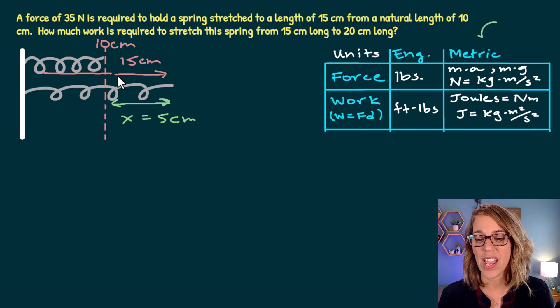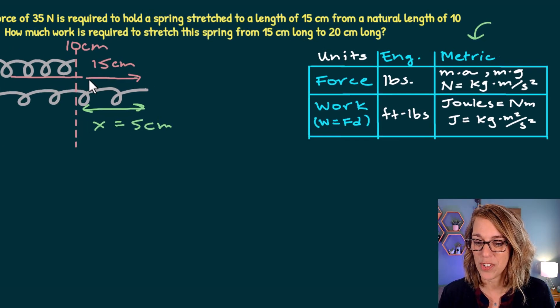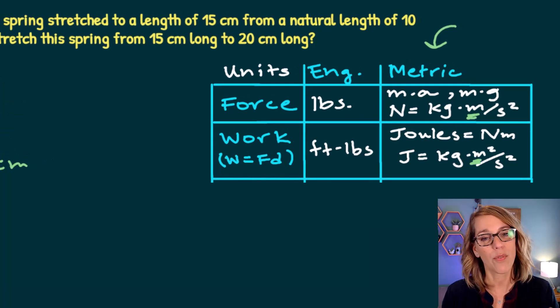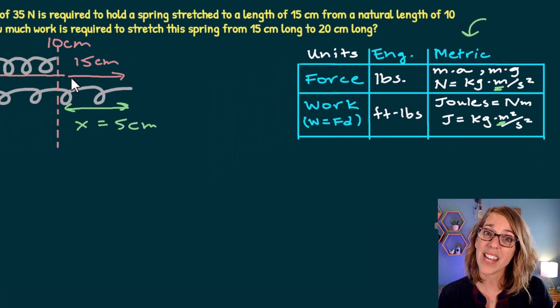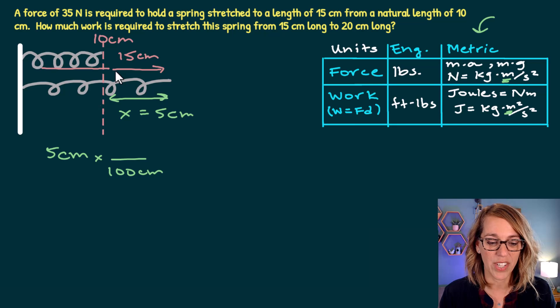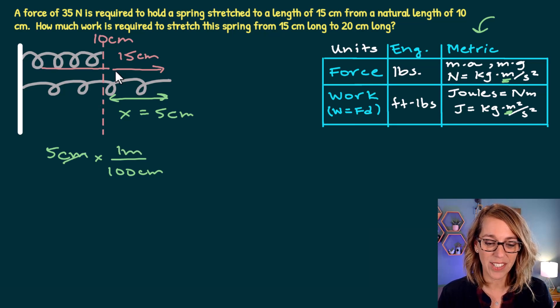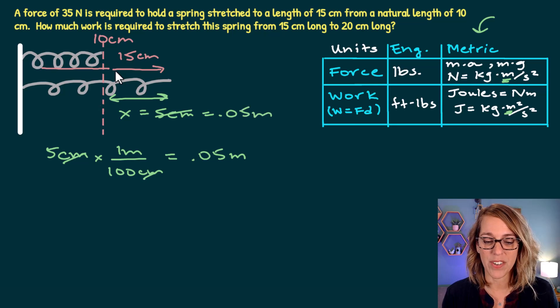Now I've got centimeters and newtons, so I am in the metric system. Let's make sure we've got exactly what we need for the metric system. In the metric system, I have meters per second squared. And then for the unit of work joules, I need meters squared per second squared. So I need to do a unit conversion here from centimeters into meters. So I'm going to do that first. So 5 centimeters times, I want to get rid of centimeters. There are 100 centimeters in one meter. So I can cancel my centimeters and I end up with 0.05, which is 5 divided by 100 meters. So I can replace my 5 centimeters with 0.05 meters.